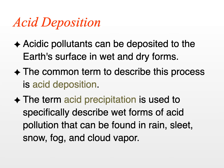The more public term is acid precipitation. But acid precipitation actually specifically describes wet forms of acid pollution, and it doesn't include things like acid fog and acid cloud vapor. Acid precipitation does include things like acid rain, acid sleet, and acid snow.